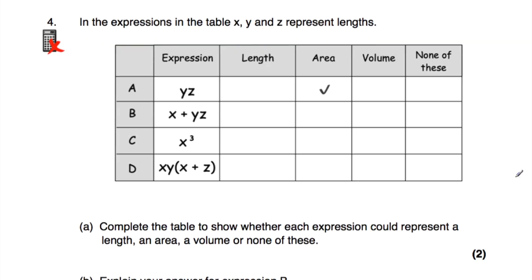Question number four. We've got four rows A, B, C, D with columns: expression, length, area, volume, and none of those. X, Y, and Z represent lengths. YZ — a length times a length — is an area. X + YZ: YZ is an area, and X is a length; a length plus an area doesn't make sense, so none of those. X³ — a length times a length times a length — is a volume. XY(X+Z): X+Z is a length plus a length, a bigger length. Multiplying by X and Y — length times length times length — gives a volume.